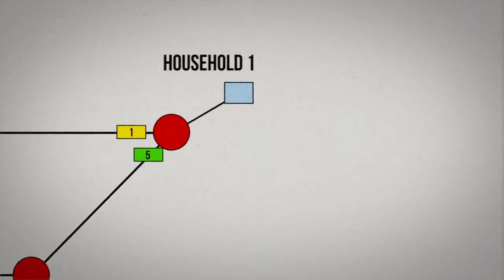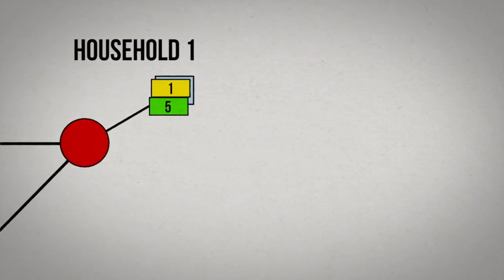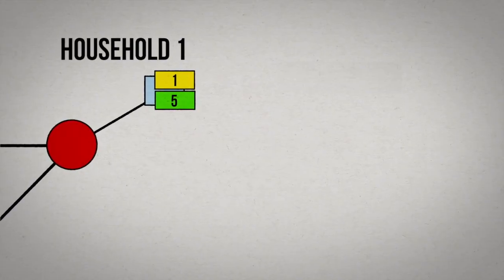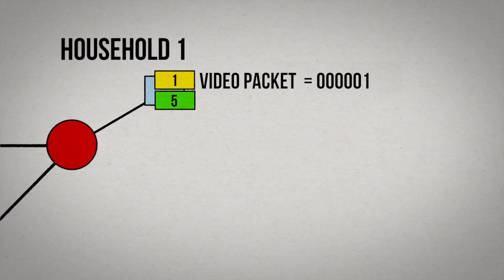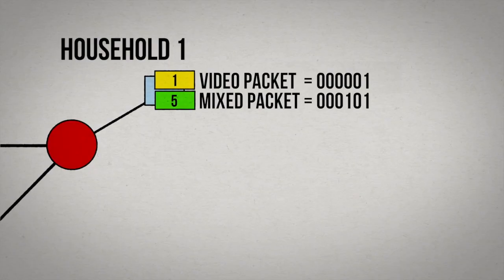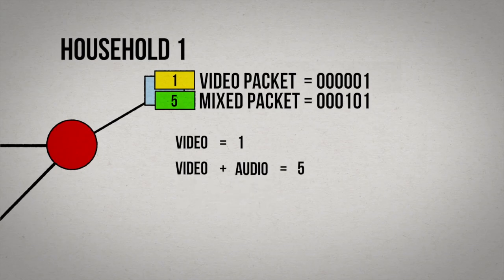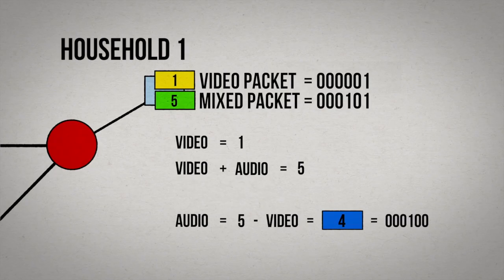Finally, the key step is to look at how we can unmix these mixtures on the receiving end. Let's look at household one. It received the video packet directly. To extract the music packet out of the mixture, it needs to solve for the missing value by doing simple math we all learn in school. We know the video packet equals one, and the video plus the music packet equals five, therefore the music packet equals four. And that's the great insight of this paper.